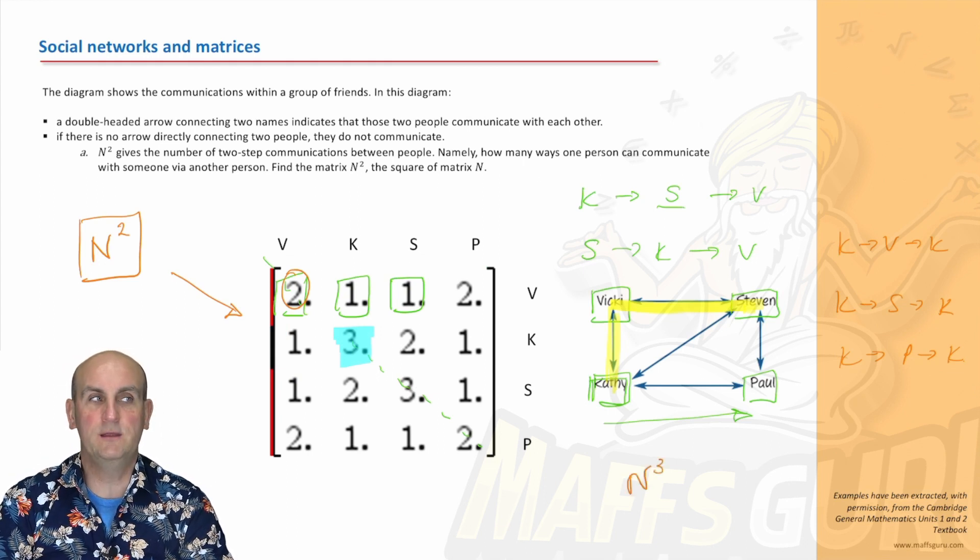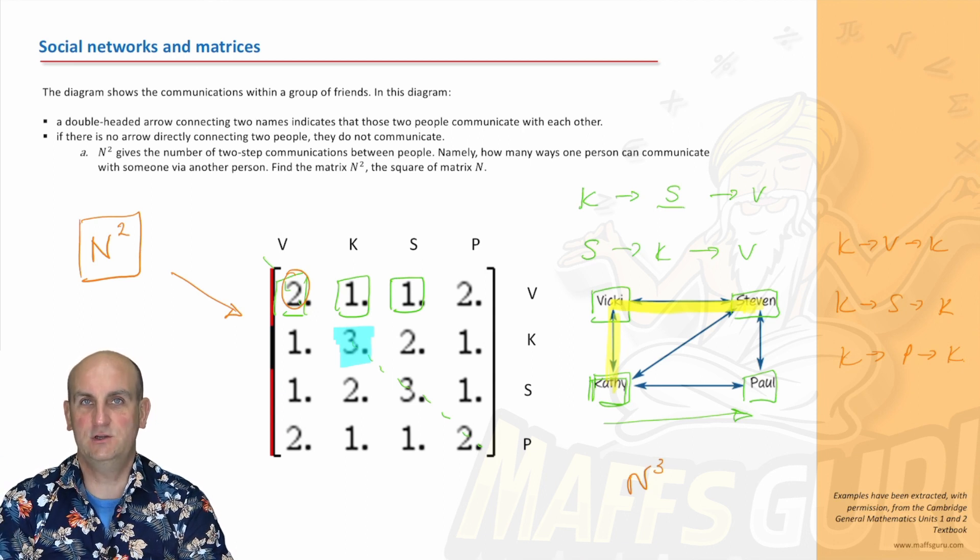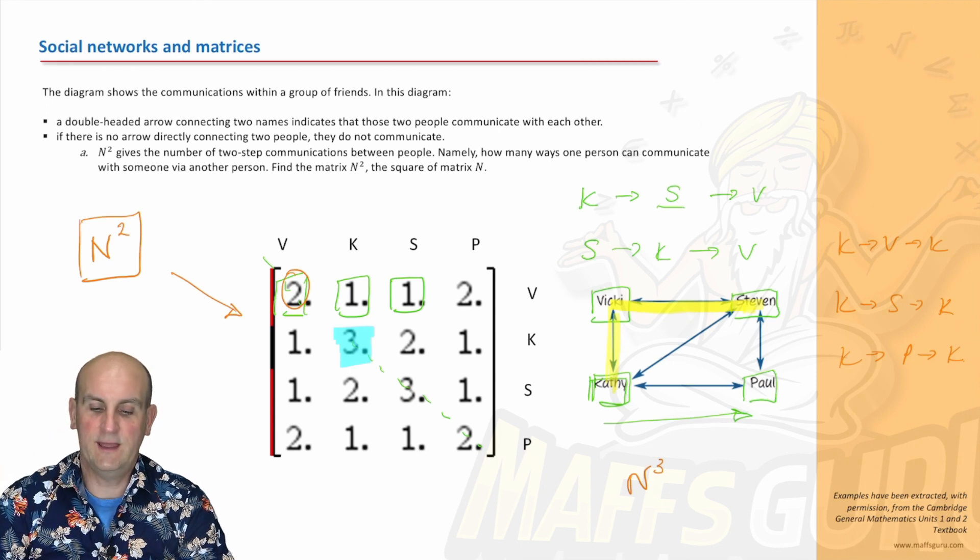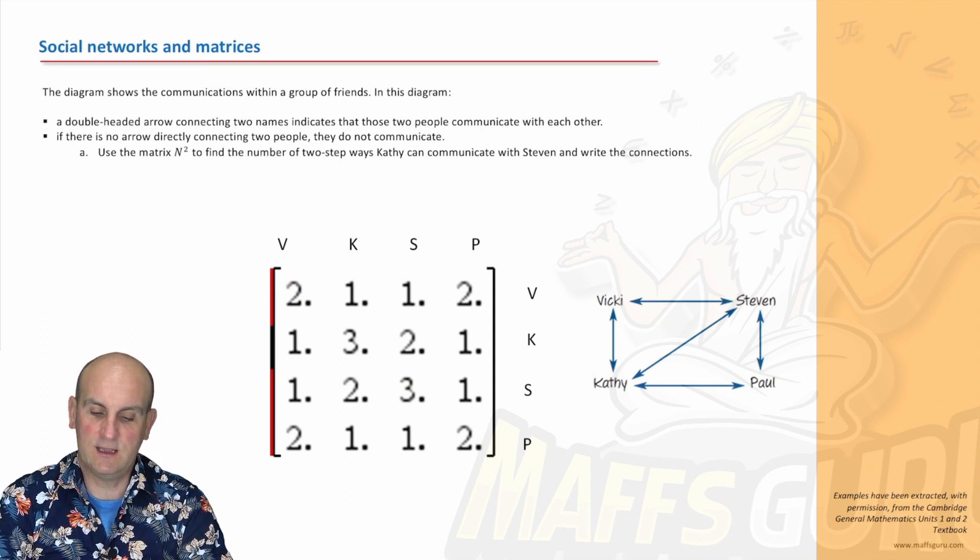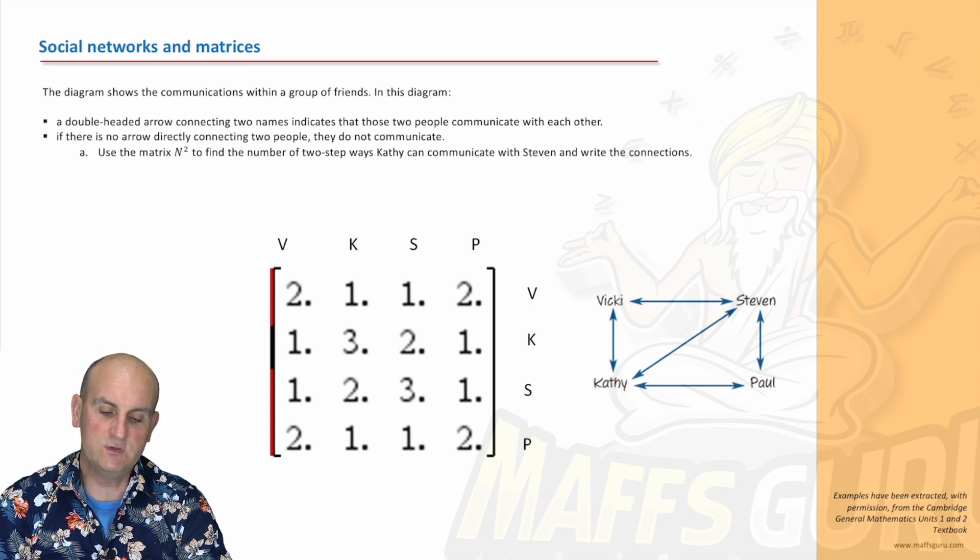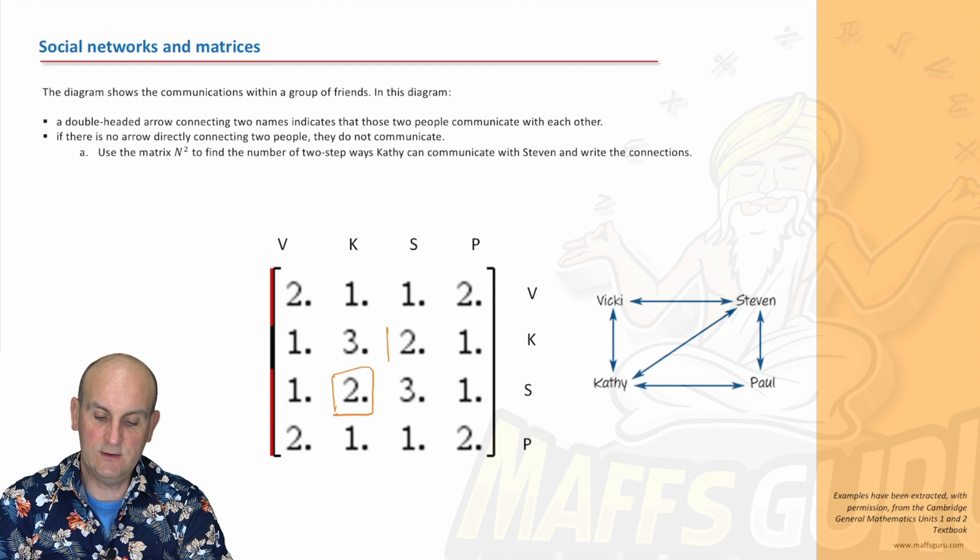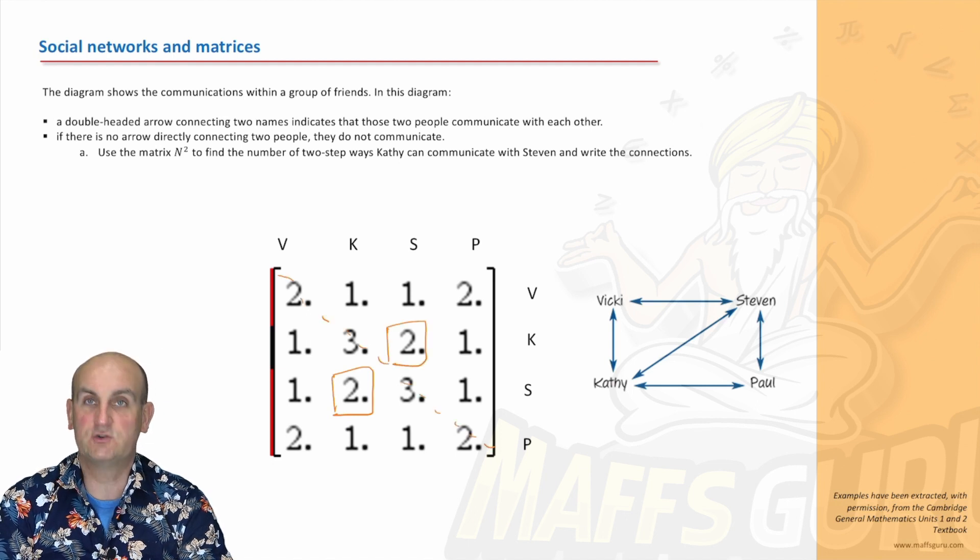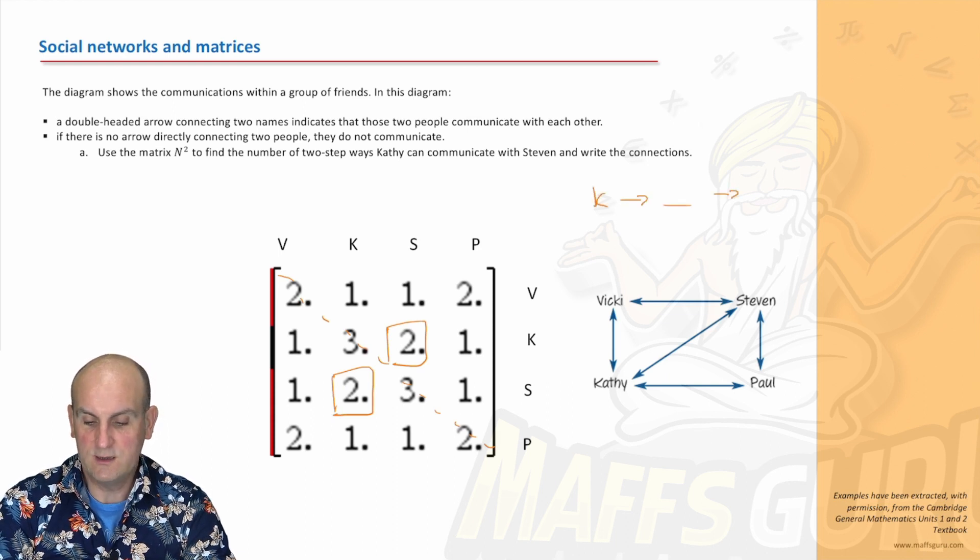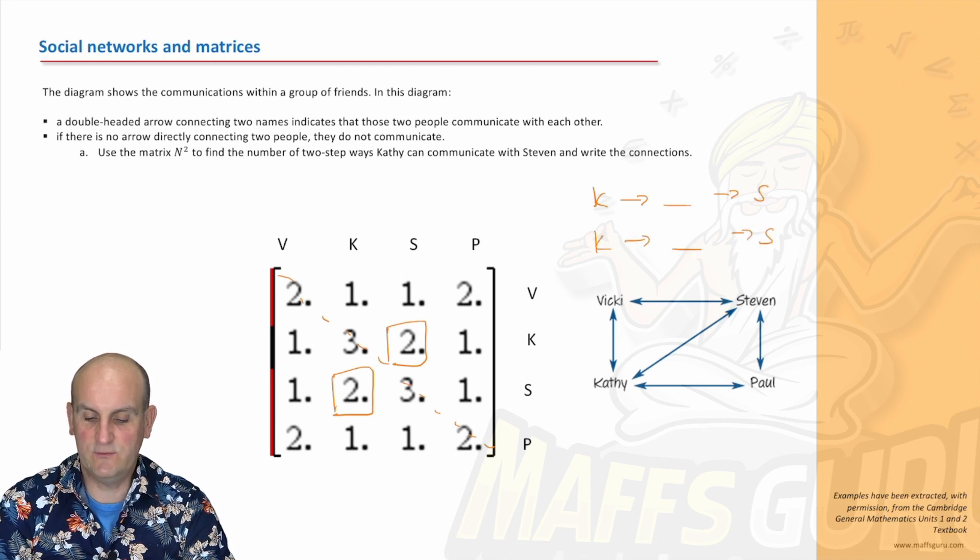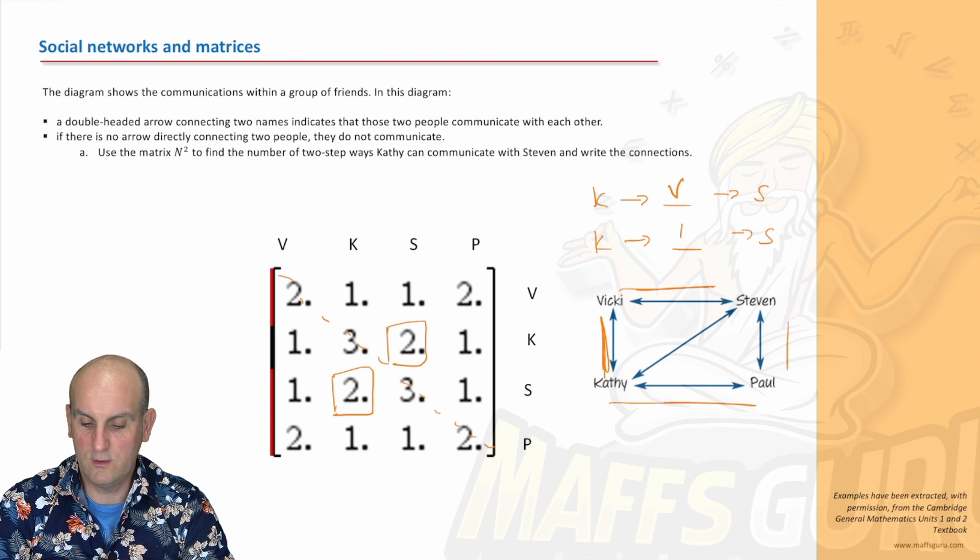What would N cubed be? Three-step communications. How can I get a message in three ways around that? Use the matrix N squared to find the number of two-step ways that Cathy communicates with Stephen. Cathy and Stephen, if we look at that, that is there. There are two ways for Cathy to communicate with Stephen. Cathy to someone to Stephen and Cathy to someone else to Stephen. Cathy can go to Vicky to Stephen or Cathy to Paul to Stephen.